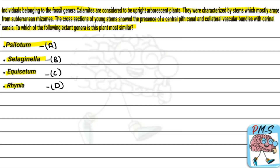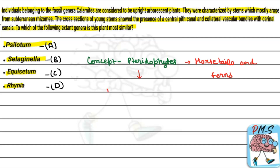Let's see the concept involved here. Our concept involves pteridophytes — which plants are included? We have horsetails and ferns. These are the first terrestrial plants with vascular tissues: xylem and phloem.